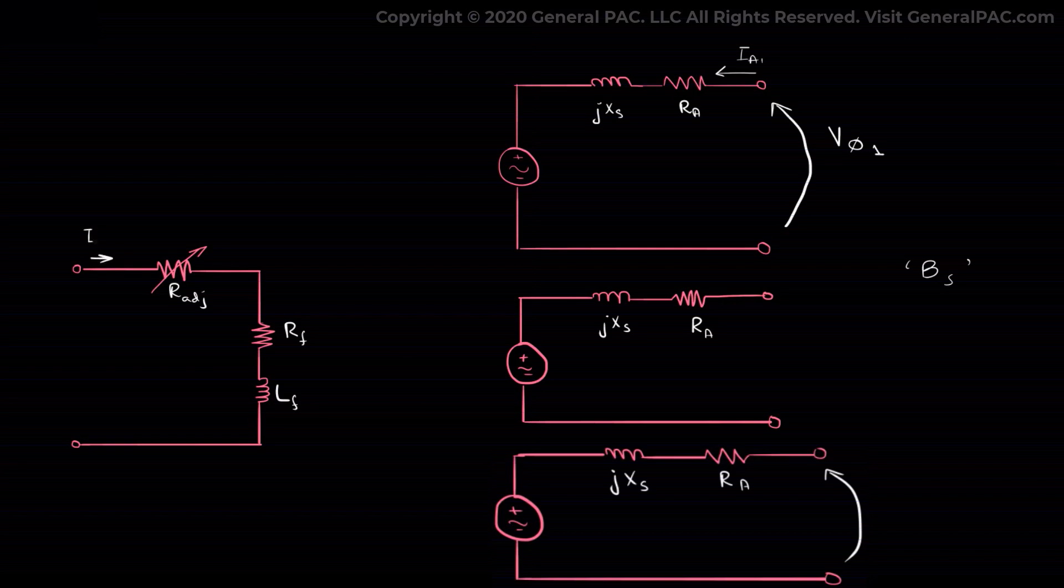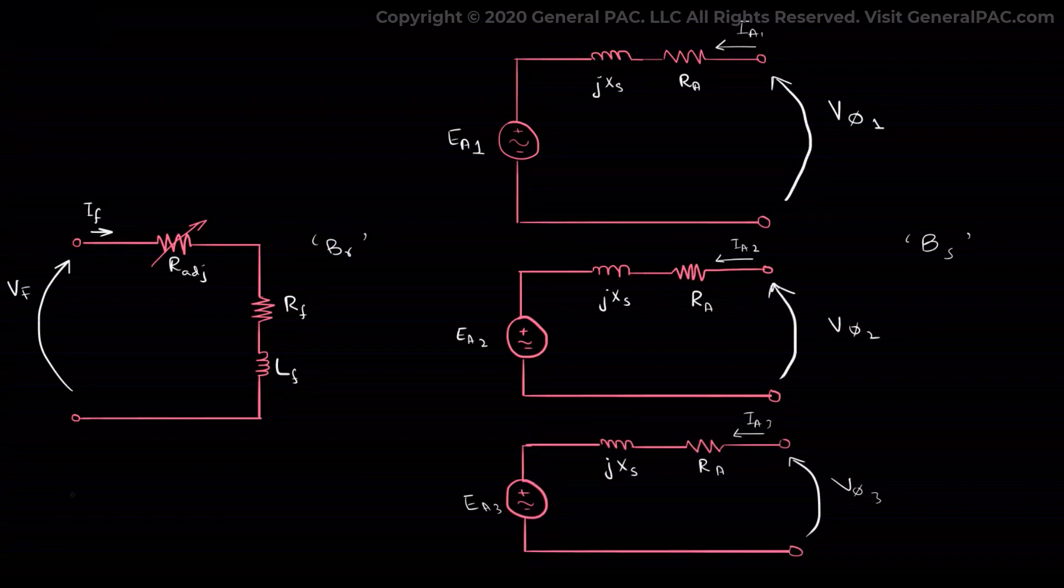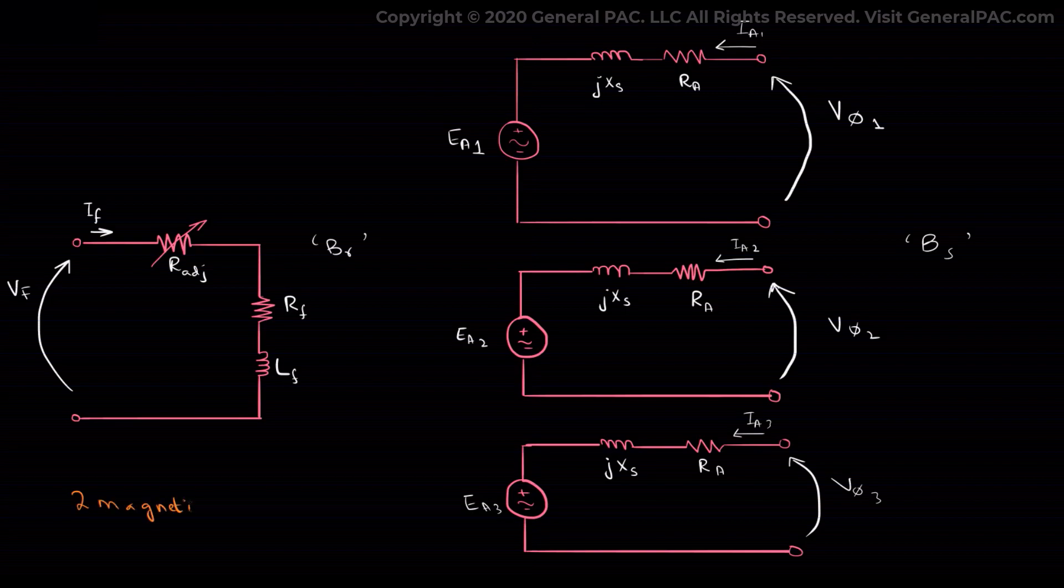When field current If is applied to the rotor winding of the motor through a DC supply, a magnetic field Br is produced in the rotor windings, leading to an induction of three-phase voltage Ea, which can also be termed as an internal generator or internal generated voltage.